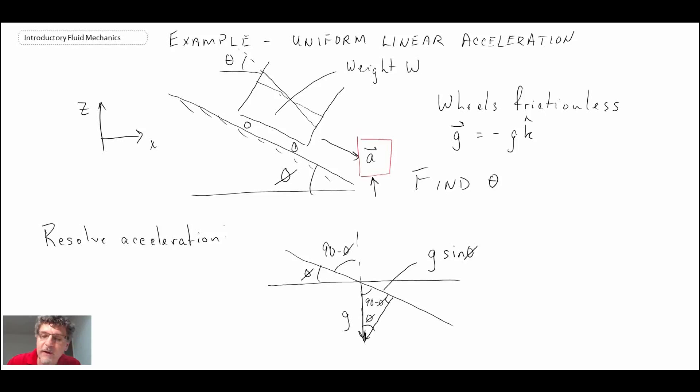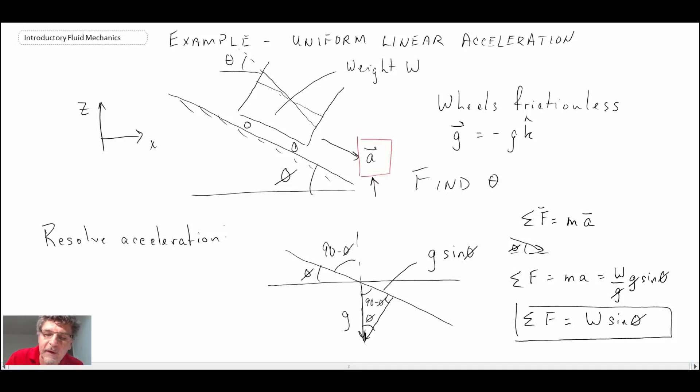We can look at the forces. We know sum of forces is equal to mass times acceleration. If we express this in the plane of the incline surface itself, we get sum of forces equals mass times the acceleration. The mass is weight divided by the gravitational constant, and the acceleration here is g sine phi. The g's cancel out, and so we are left with sum of forces equals weight times sine phi.